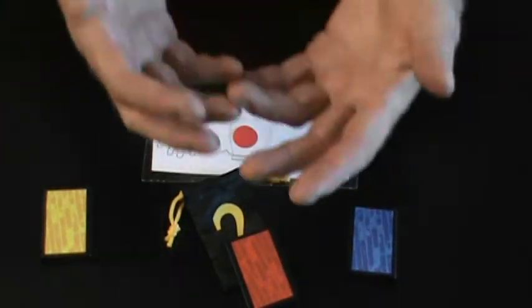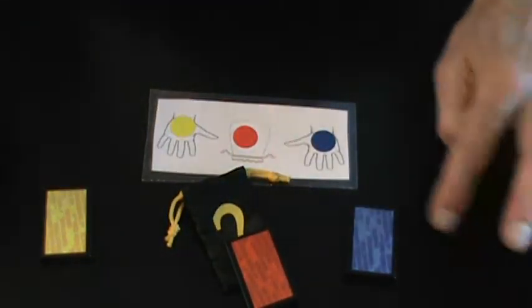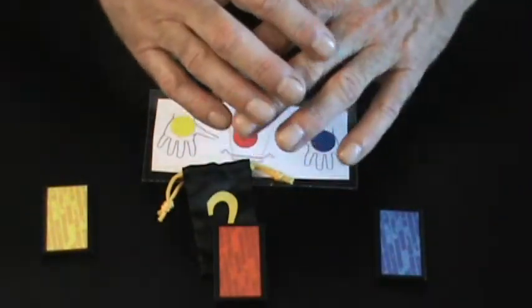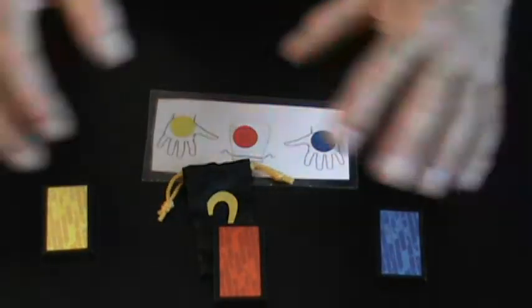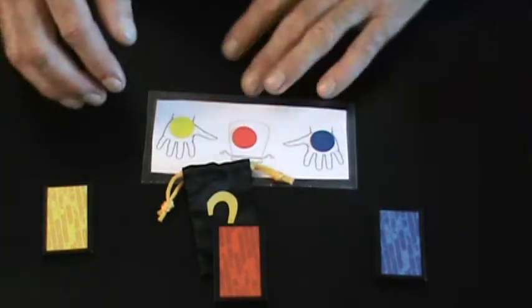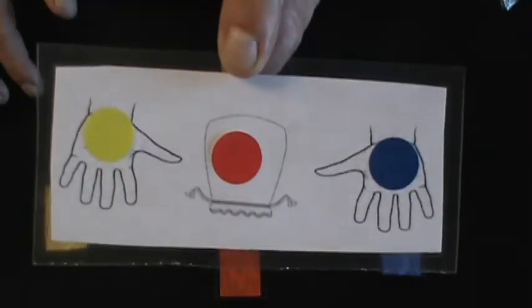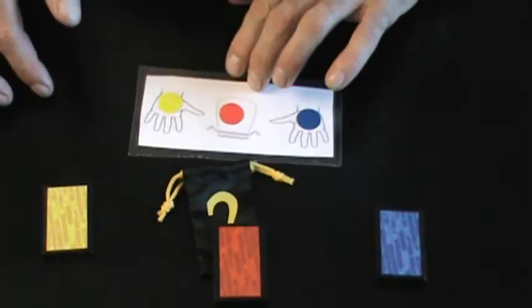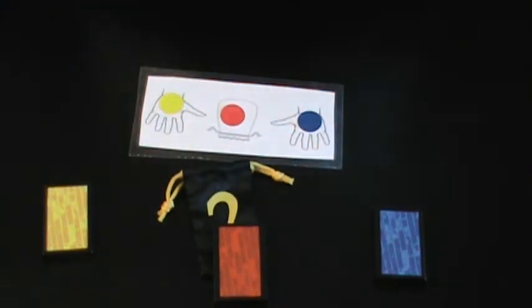It's a cool little trick. Everything is examinable. They select the colors while you're turned away. You never see their selections, and you predict all three positions. 100% accuracy. You can repeat it. It's a cool trick.